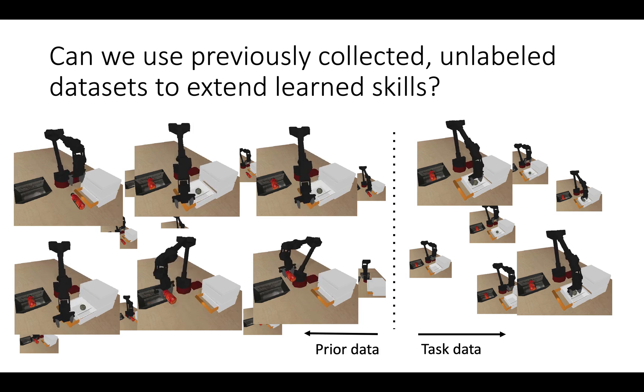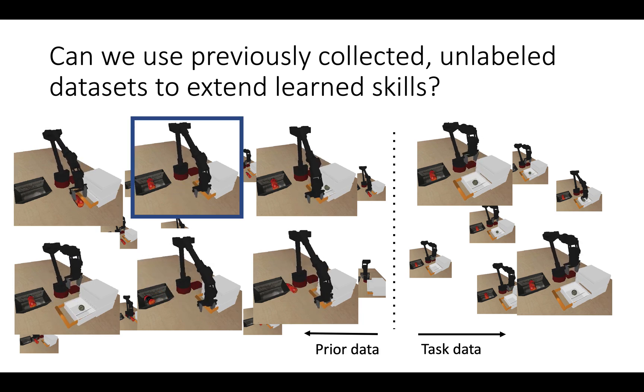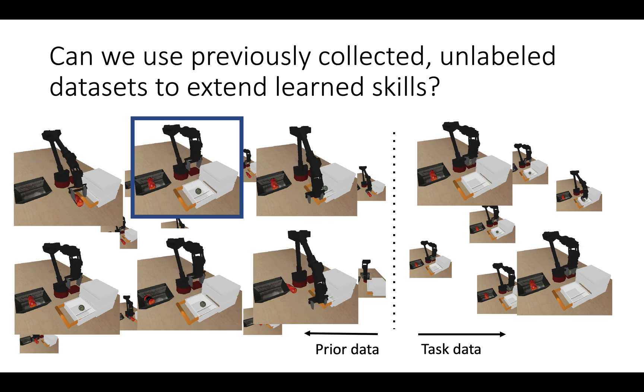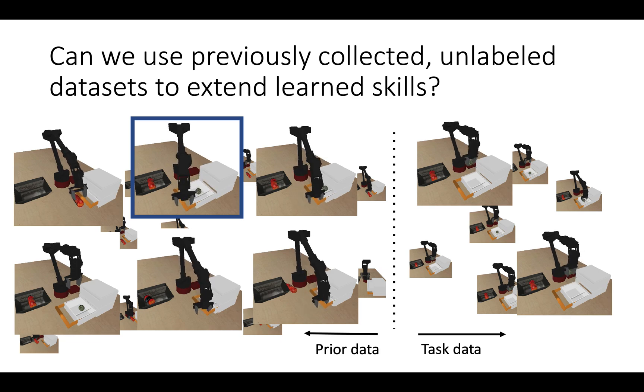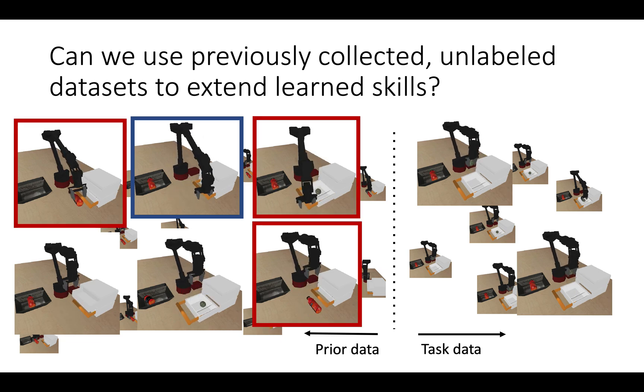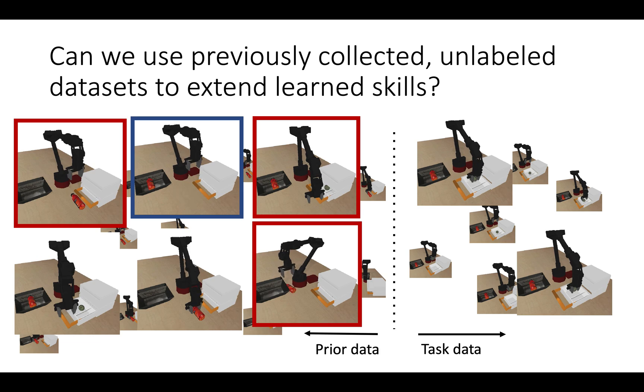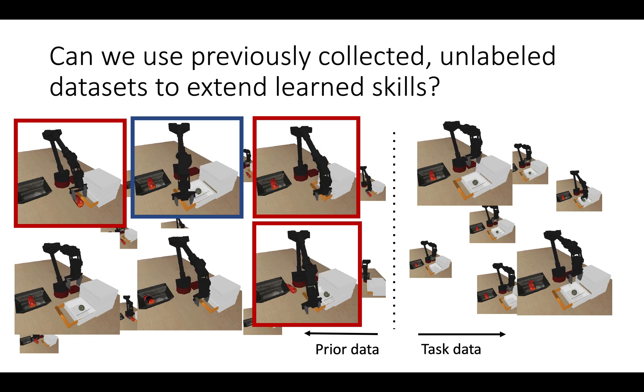If a subset of this prior dataset is useful for extending our skill, we can leverage it for learning a policy that can solve the task from new initial conditions. Note that not all prior data has to be useful for the downstream task, and we don't need this prior dataset to have any explicit labels or rewards either.